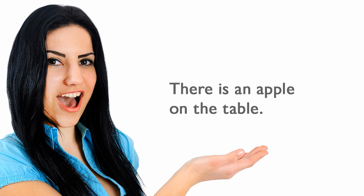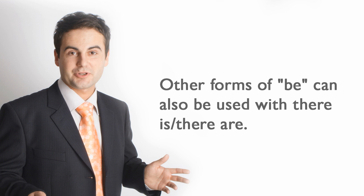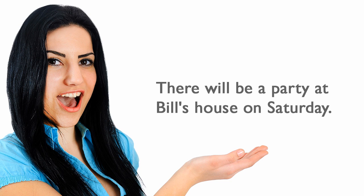There is an apple on the table. Other forms of be can also be used with there is or there are. There will be a party at Bill's house on Saturday.